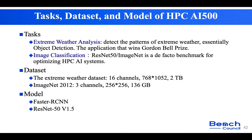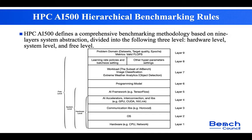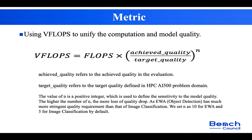Above all, HPC AI500 includes two workloads from AI Bench: extreme weather analysis and image classification, with the datasets and models listed. For fairness of performance ranking, we define layered benchmarking rules consisting of hardware level, system level, and framework level. Each level has different restrictions on hardware, software settings, parameter settings, and communication technologies. We also propose a new metric, VFLOPs, to unify computation and model quality, combining computation performance with whether convergence quality is close to the target quality.